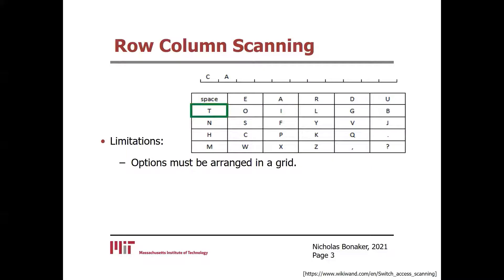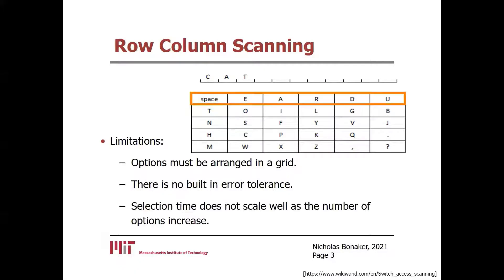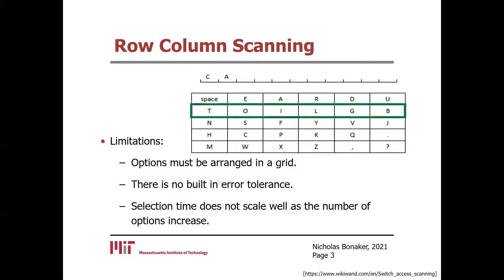Secondly, row-column scanning has no built-in error tolerance. Single-switch users often have a fair amount of noise in their activation times, and even just activating their switch can be arduous. For these reasons, making and correcting errors poses a large burden for single-switch users. Lastly, the selection time does not scale well as the number of options increases. Lots of dead time can accrue as users wait to scan through long lists of options, posing a barrier to tasks that require a large number of options such as computer navigation and gaming.